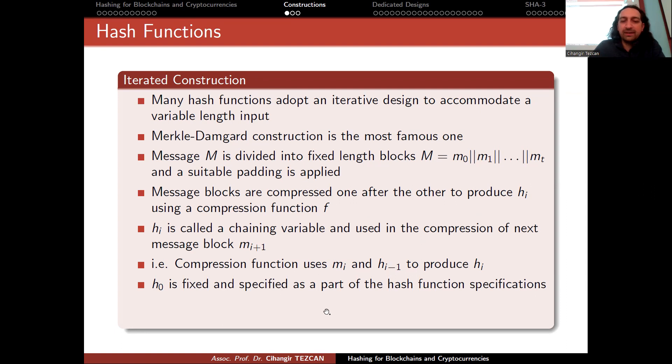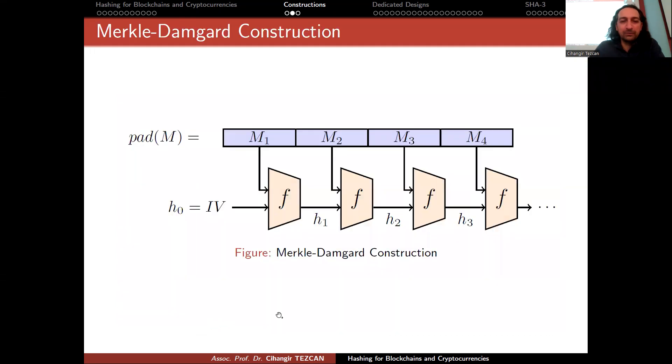h_0 is fixed and specified as a part of the hash function specifications, sometimes referred to as IV. Sometimes the finalization operation is applied to overcome some attacks. In most of the Capture the Flag competitions in Turkey, this is asked, so you should kind of know that.